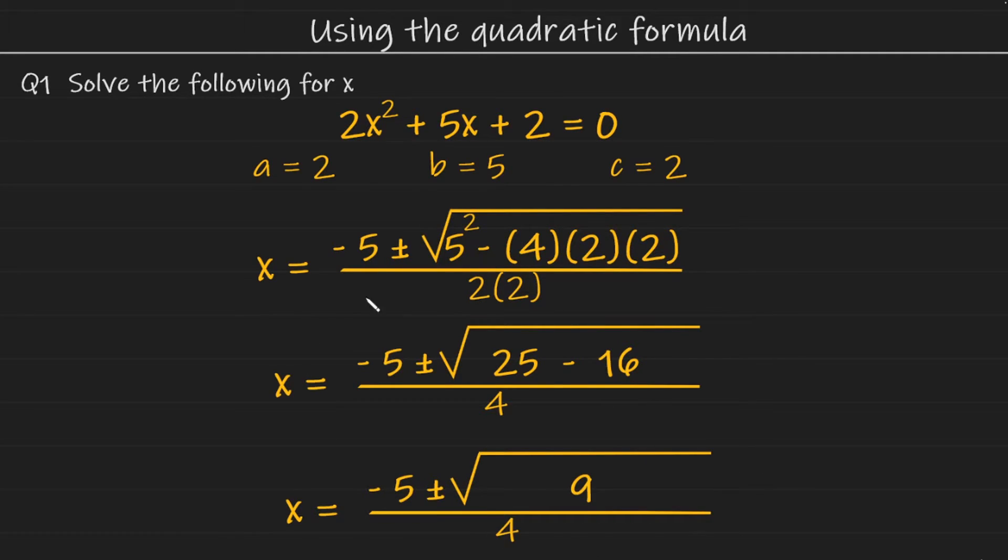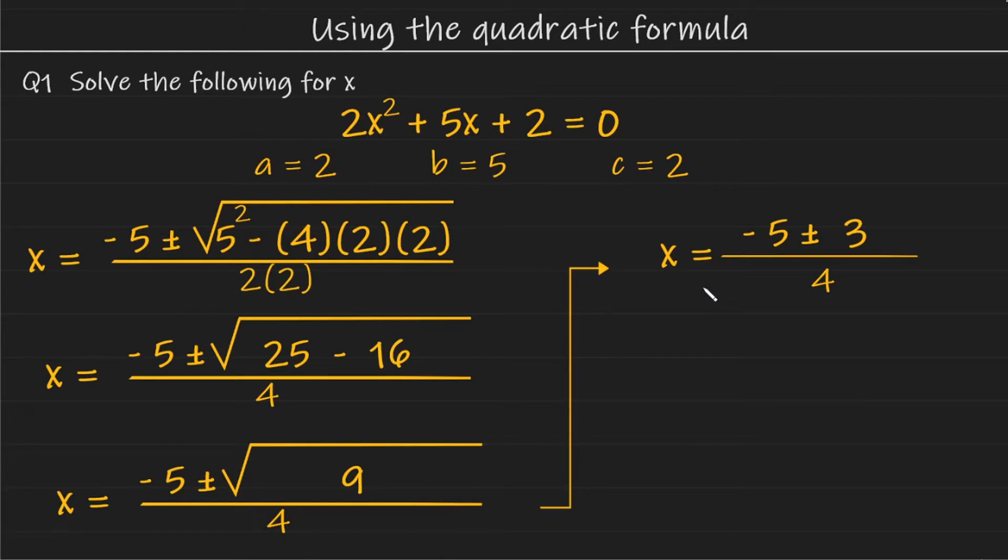And I'm just going to move everything over to the left-hand side here, so I have more room to continue my working out. So now we have x is equal to minus 5 plus or minus 3 all over 4.